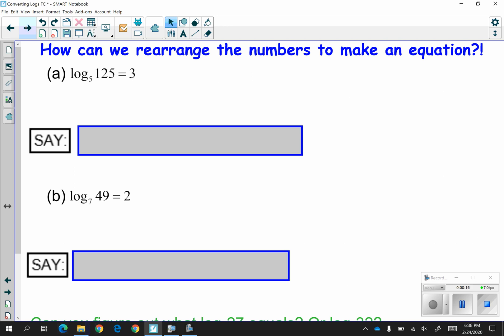So what we can do is rearrange this equation to make something that makes more sense to us. The way you can read a log is by saying 5 to what power is 125? And the answer would be 3 because 5 to the third power is 125.